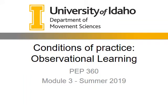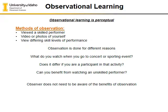Another component of conditions of practice is: do we actually need to be performing the task to have some sort of learning? The idea is that we have some ability to learn a task through the observation of others. Observational learning allows you to perceptually process a task through sight and vision while rehearsing it mentally. There are many methods of this observation.